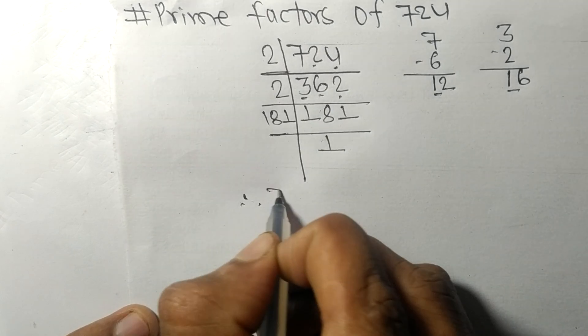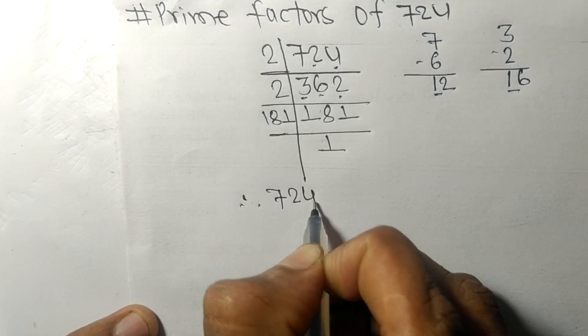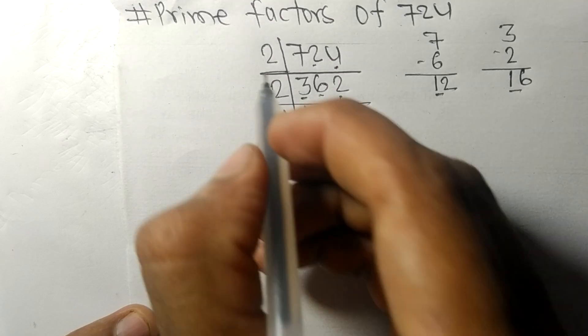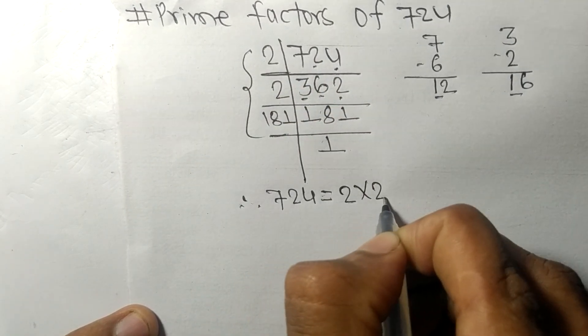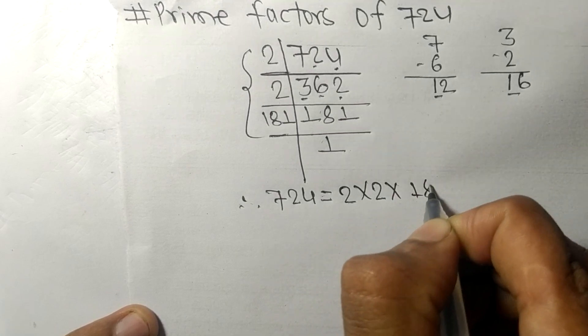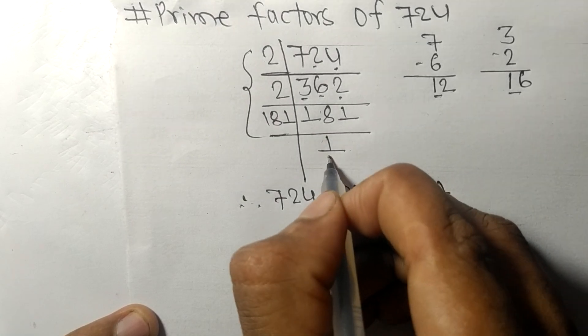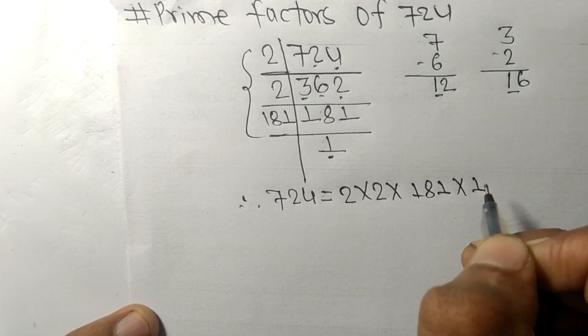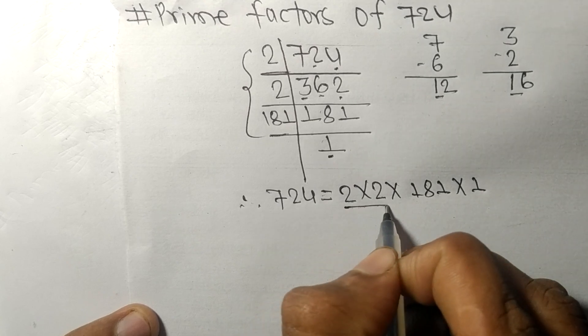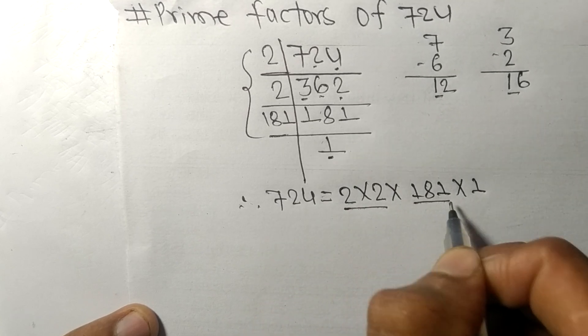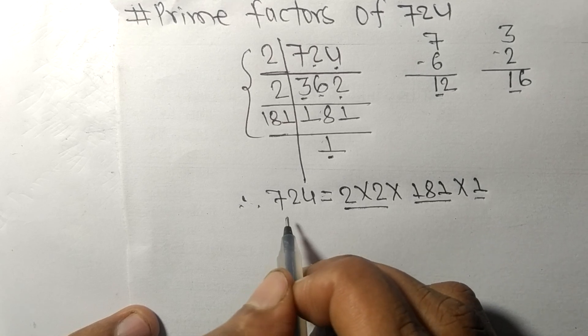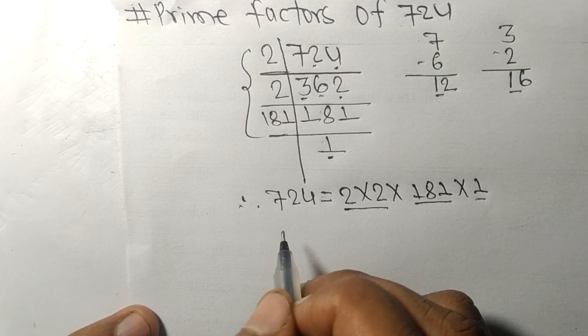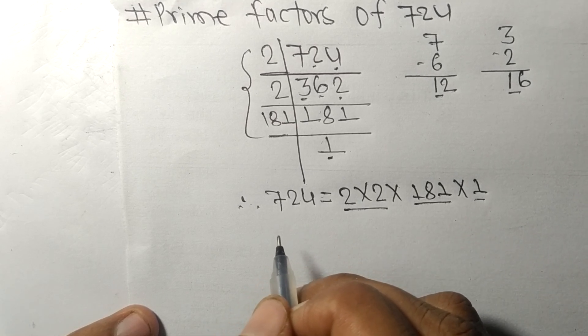Therefore, 724 is equal to 2 times 2 times 181 times 1. So 2, 181, and 1 are the prime factors of 724. So this much for today and thanks for watching.